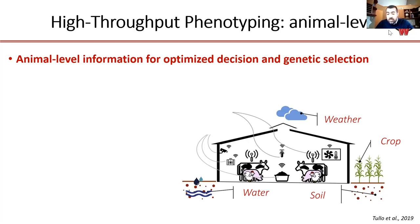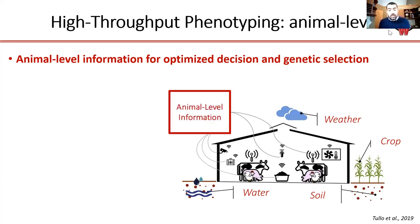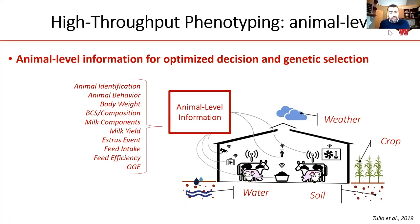The need for large-scale phenotyping collection is clear in precision agriculture. We see people integrating data from crops, weather, soil, and water. In livestock, one missing point is animal-level information. We can aggregate data from public databases and farm records, but we do not have a good way to obtain animal-level information, and this limits what we can do in terms of optimized decisions.